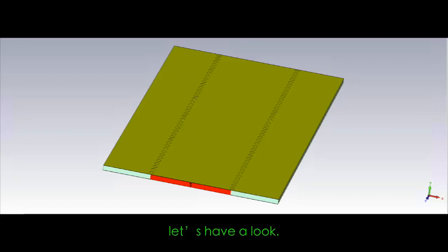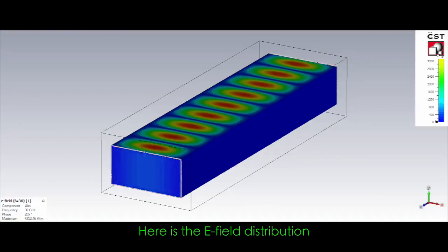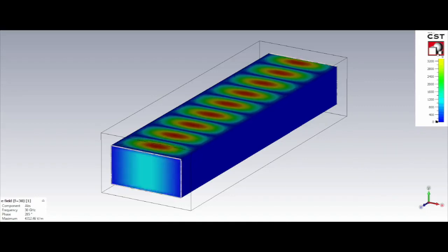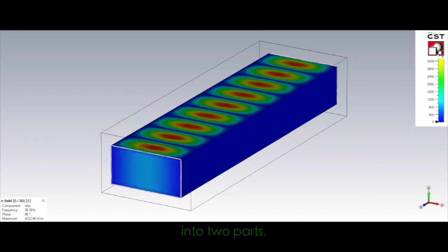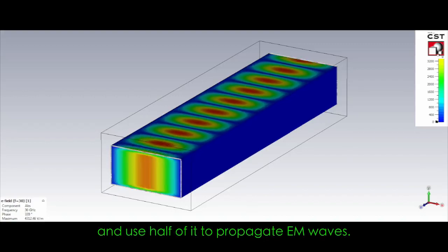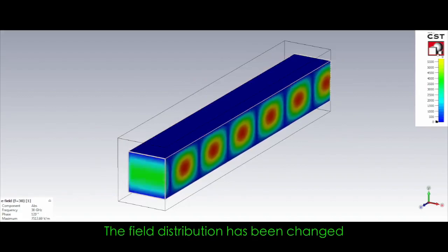If you are curious about this, let's have a look. Here is the E field distribution in a WR28 waveguide. If we cut this metallic waveguide into two parts and use half of it to propagate EM waves, the field distribution has been changed.